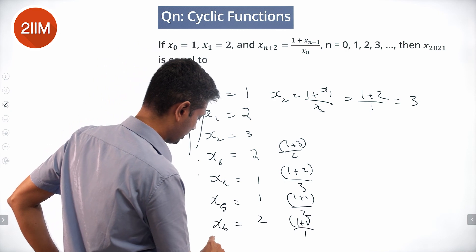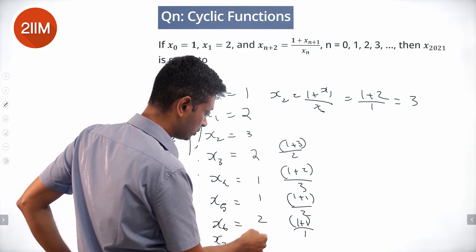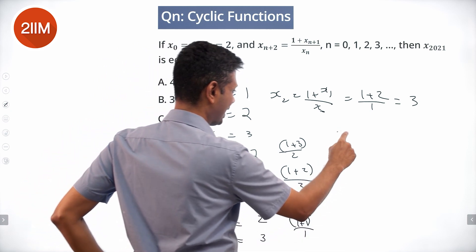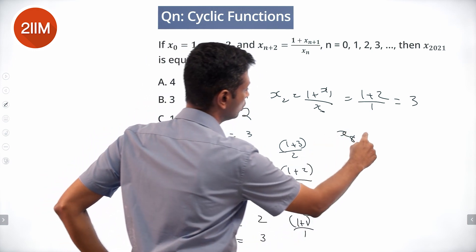So x₇: 1 plus 2, 3 by 1, equals 3. x₈: 1 plus 3, 4 by 2, equals 2.